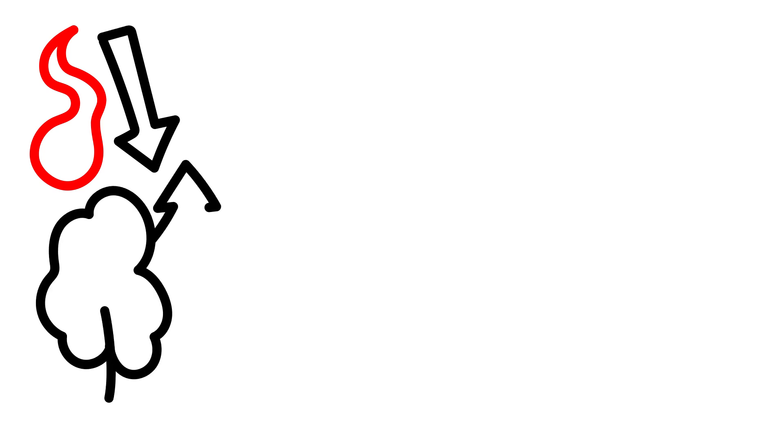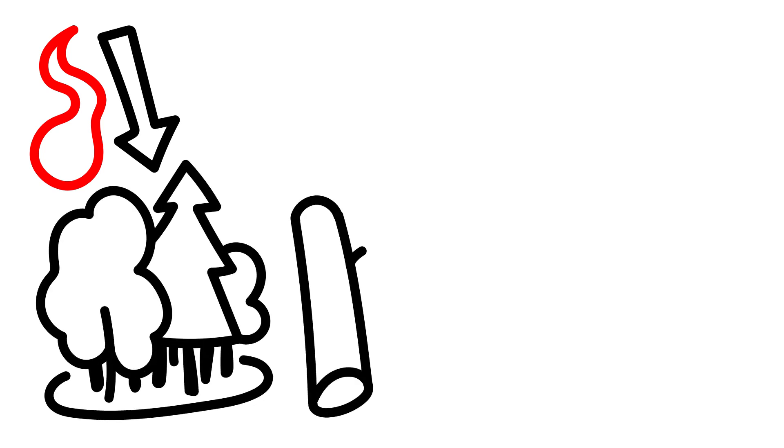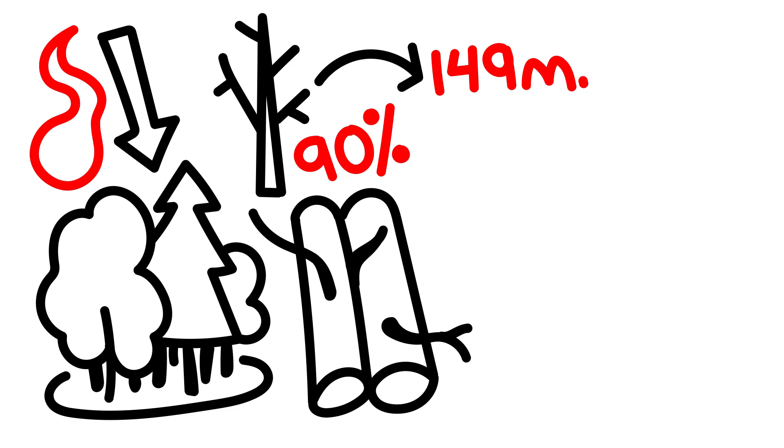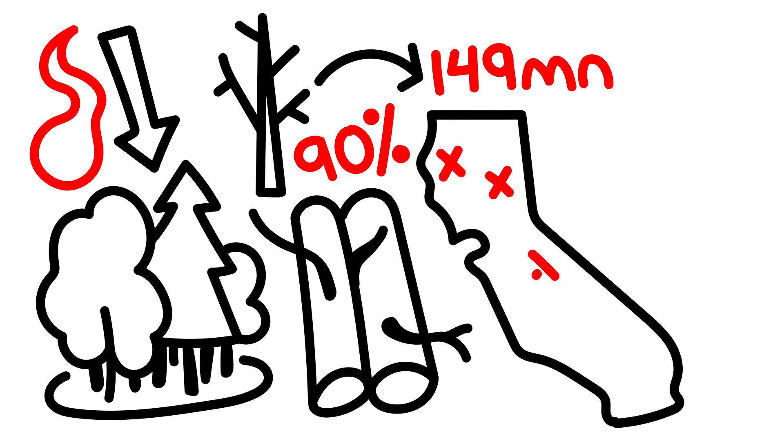Fewer fires have led to denser, more flammable forests, packed with the combustible needles of all conifers and the dry branches of dead or dying trees. Up to 90% of trees are dead in some places, with around 149 million dead trees spread throughout California.